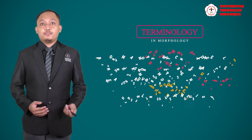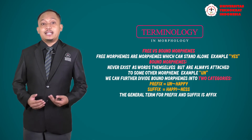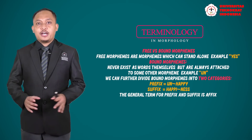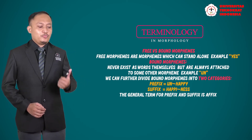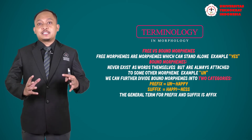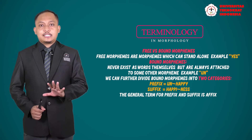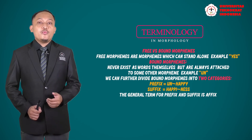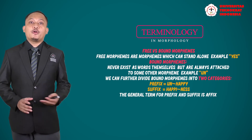Morphemes can be divided into several categories. Category number one is free morphemes versus bound morphemes. Free morphemes are morphemes that can stand alone and cannot be classified into smaller parts — for example, the word 'yes' or 'no.' Bound morphemes are the opposite; they cannot stand alone.